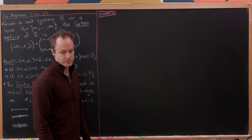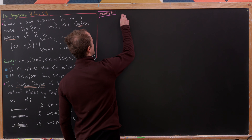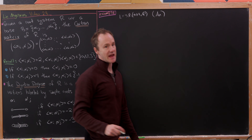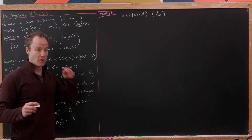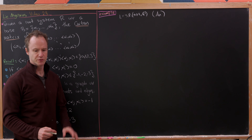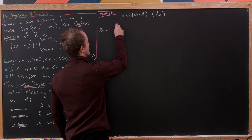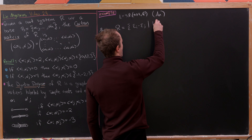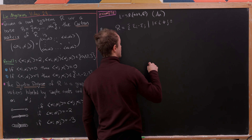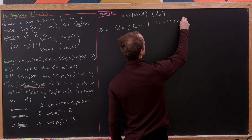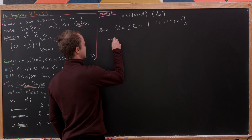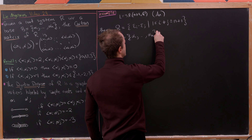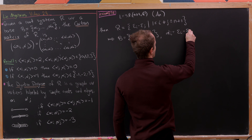So now let's look at an example. If we have a Lie algebra L which is SL(n+1) with entries in C — in other words, it's in the series A sub n — then the roots are epsilon i minus epsilon j, where 1 ≤ i ≠ j ≤ n+1. That's going to give us simple roots alpha 1 up to alpha n, where alpha i is epsilon i minus epsilon i plus 1.